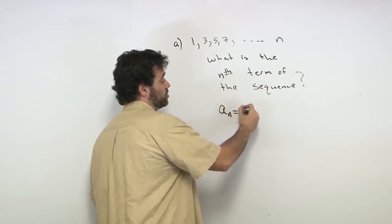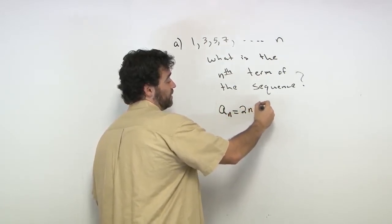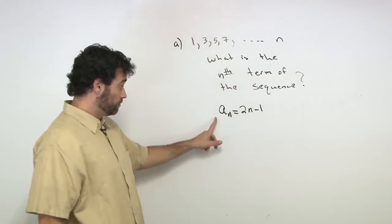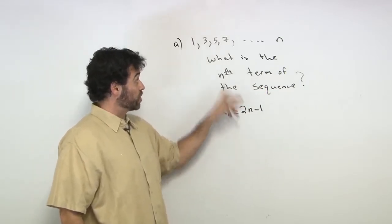A_n is 2n minus 1. There's our formula, because it's going up by 2's.